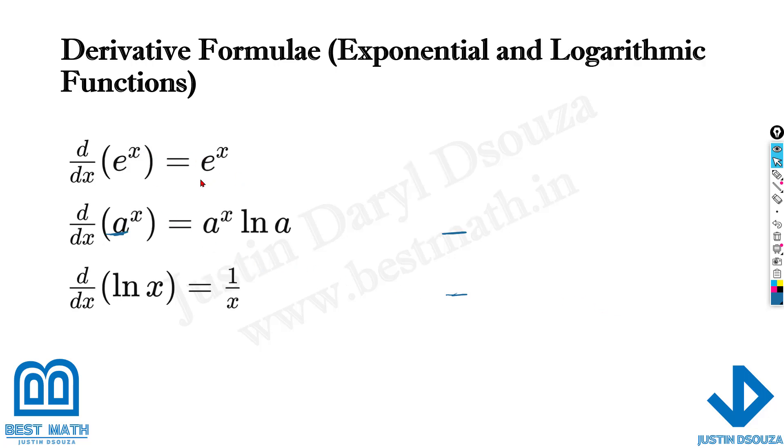And lastly, for the exponentials, it's just e^x, whereas if it's a constant term to the raised power, then it is a^x times natural logarithm a, with whatever the base is written over here. And natural logarithmic is 1 by x.